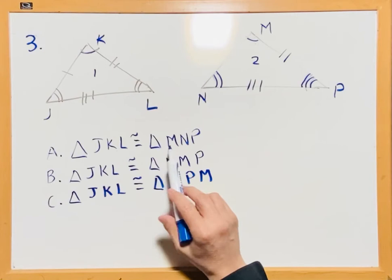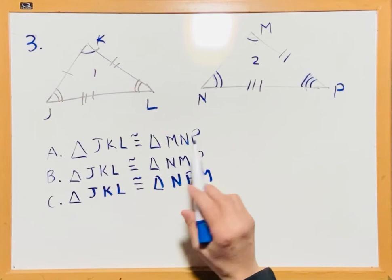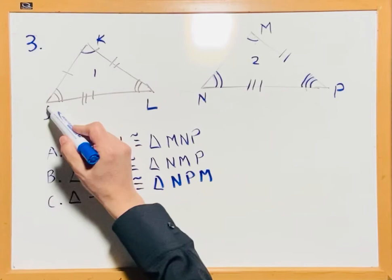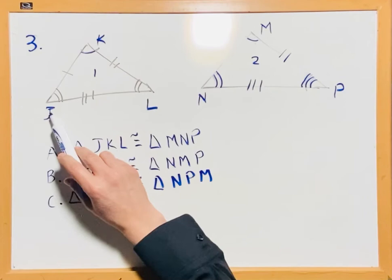We have to tell which statement is going to be true. We have here J, K, L. To know which statement is true, we have to identify the corresponding angle.